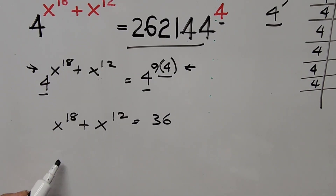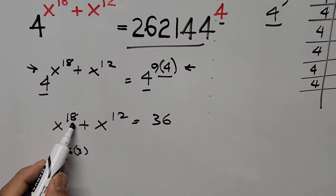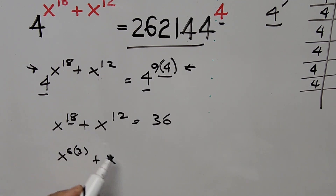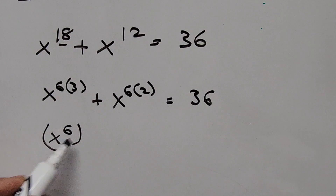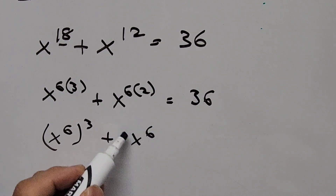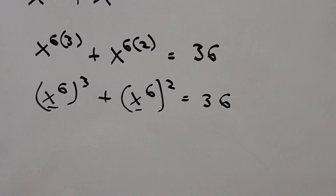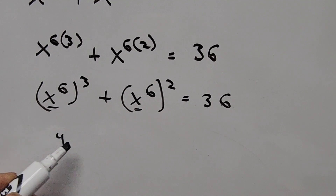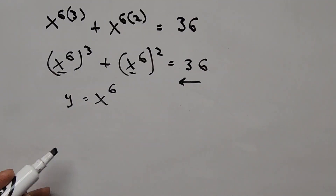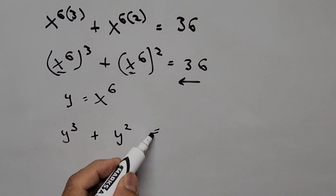The first term x^18 can be written as x to the power of 6 times 3, and the second term x^12 as x to the power of 6 times 2. So the equation becomes (x^6)^3 + (x^6)^2 = 36. We introduce a substitution variable y = x^6, so the equation now becomes y^3 + y^2 = 36.